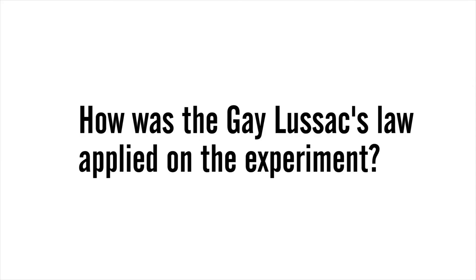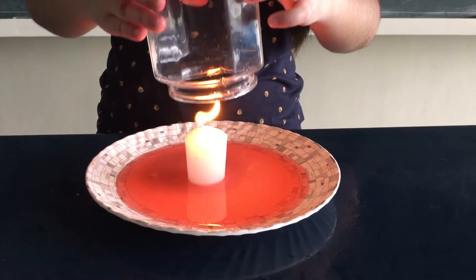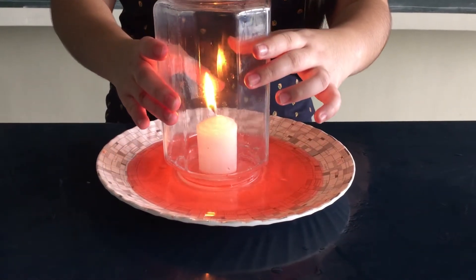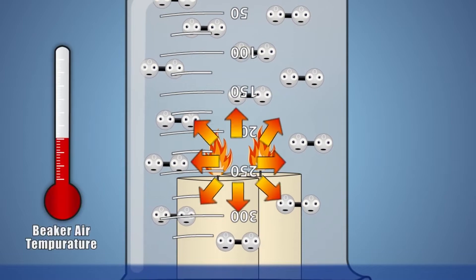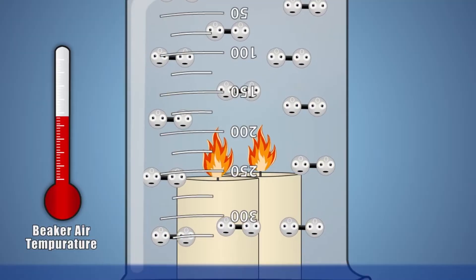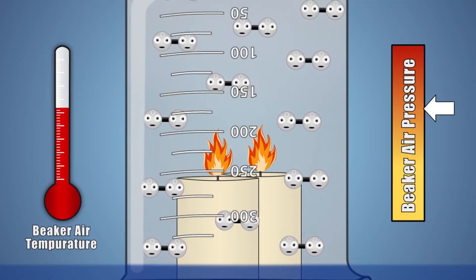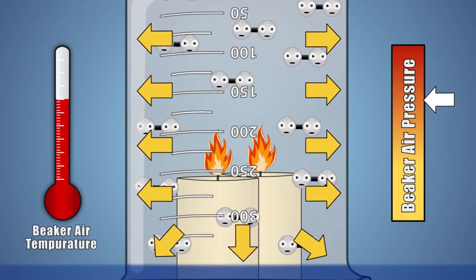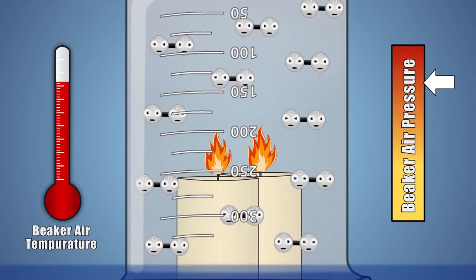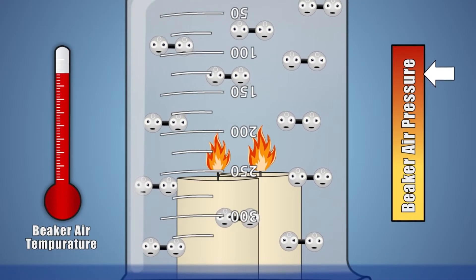How was Gay-Lussac's law applied in the experiment? The jar is placed over the candle, and the flame heats the air up. When the air is heated, the gas particles expand and move faster, putting pressure on the water. Higher temperature equals higher air pressure. This is stated in Gay-Lussac's law, where pressure increases proportionately to temperature increase.